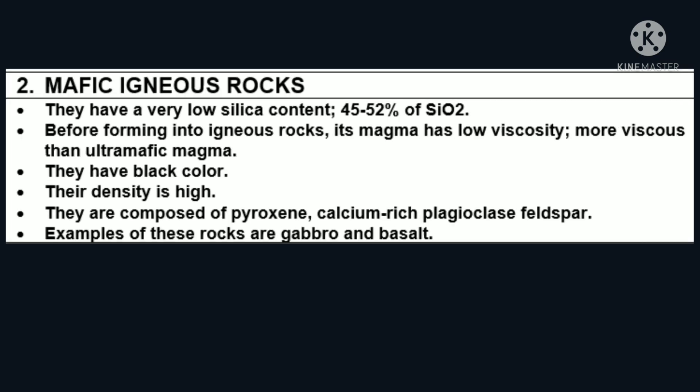Ang pangalawa ay ang mafic igneous rocks. Ito ay very low rin ang silika content, umaabot sa 45% to 52%. At bago maform into igneous rocks, ang magma nito has low viscosity, pero mas viscous siya sa ultramafic magma. Ang kulay ay black, mataas ang density, at mataas ang pyroxene, calcium-rich plagioclase feldspar. Examples of these rocks are gabbro and basalt.